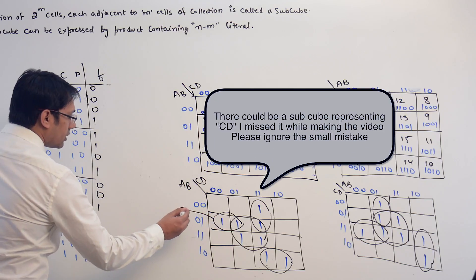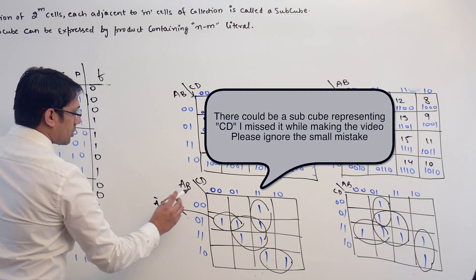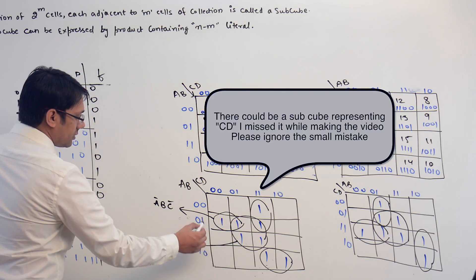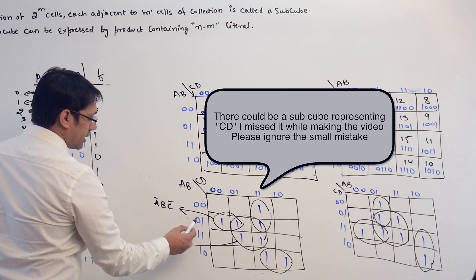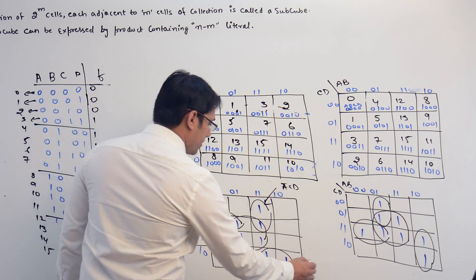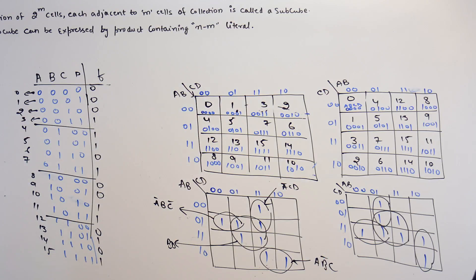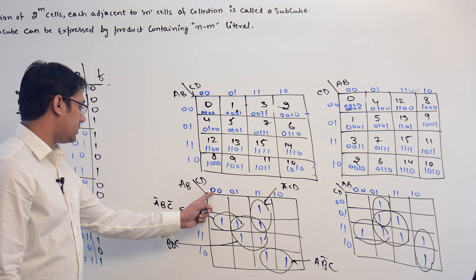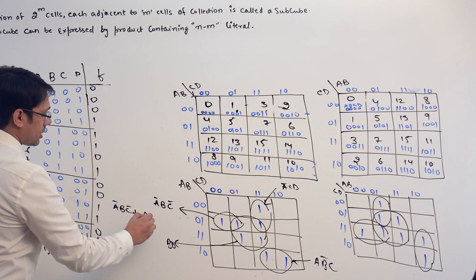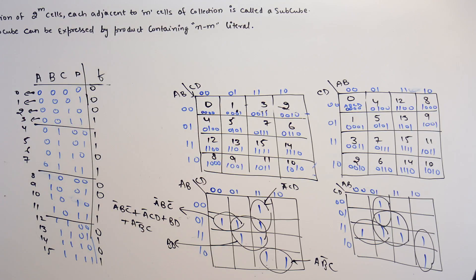Here in this case, we can make 1 biggest subcube here, we can make this subcube, we can make this subcube, we can make this subcube. This subcube is representing the term where AB is not changing, so it is A complement B and C complement, but D is changing. This subcube is representing the term B and D, because A is changing as well as C is changing. This subcube is representing the term AB complement C. And this is A complement B and C.